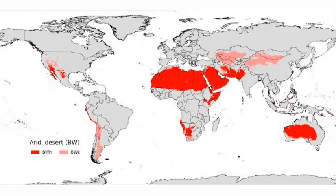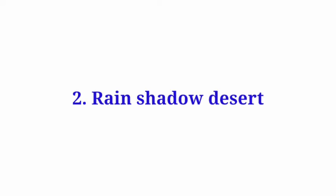The first one is hot dry desert, which exists in subtropical regions. They exist along the Tropic of Cancer and the Tropic of Capricorn. In the subtropical region, pressure differences and circulation patterns of air masses hinder the formation of clouds, and that's why there is little rainfall, which eventually causes subtropical deserts.